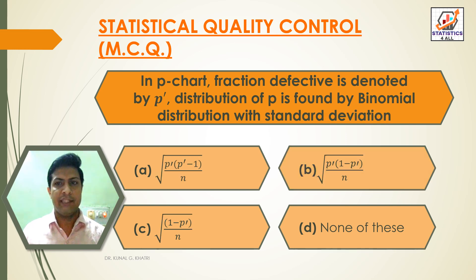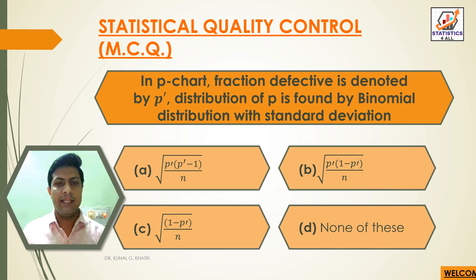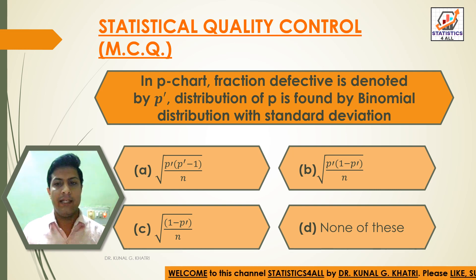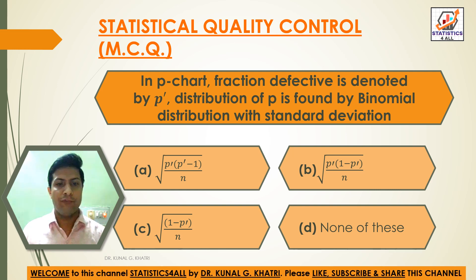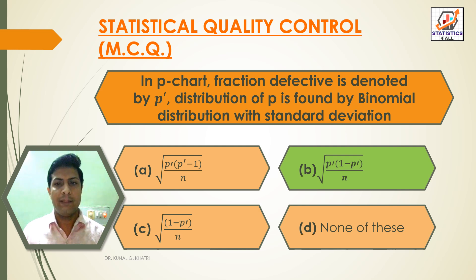Question 8: In P chart, fraction defective is denoted by P-dash. Distribution of P is found by binomial distribution with standard deviation: Option A: √(P-dash × (P-dash − 1) / n), Option B: √(P-dash × (1 − P-dash) / n), Option C: √((1 − P-dash) / n), Option D: None of these. Answer: Option B — √(P-dash × (1 − P-dash) / n).